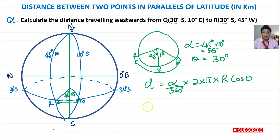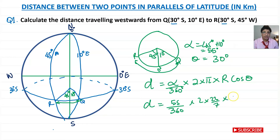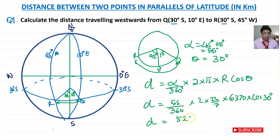Putting in the values: d equals 55 divided by 360, times 2 times 22 over 7, times the radius of the Earth — I'm using 6370, though you can use 6400 — times cos 30 degrees. If you work this out, the distance equals 5296 kilometers.